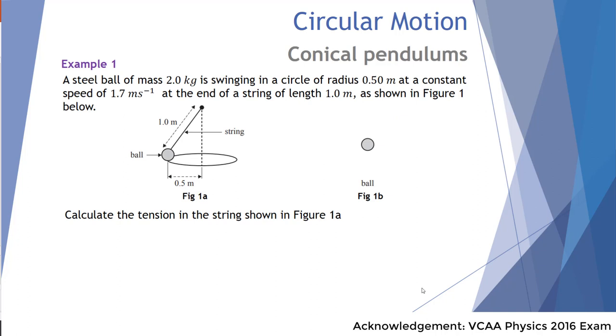We're now asked to calculate the tension in the string as shown in figure 1a. Now there's more than one way of doing this. Option number one is to simply use the following data. So the force of the tension is question mark, the mass is 2 kg, the radius is 0.5 m, the velocity or the speed is 1.7 m/s, and gravity is 9.8 N/kg. So we know using the Pythagorean method that the force of tension is equal to √(F_net² + Fg²). We can expand that where F_net is MV²/R and Fg, gravitational force, is Mg.